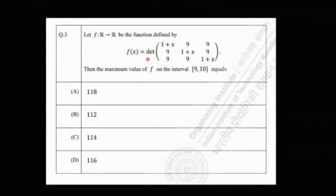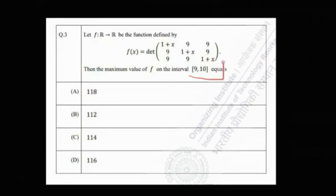Welcome to Chintha Statistics and Data Science. Today we are going to solve problem number three from IIT JAM MS 2022. The problem says: let f be a function mapping from R to R such that f(x) equals the determinant of the matrix with entries 1+x, 9, 9 / 9, 1+x, 9 / 9, 9, 1+x. We need to find the maximum value of f on the closed interval [9, 10].